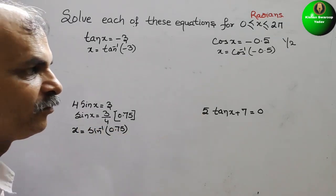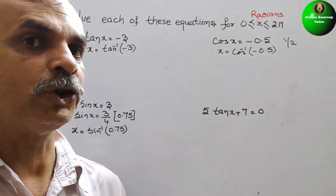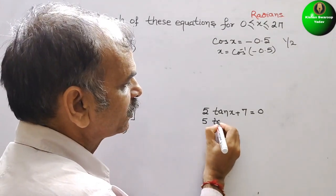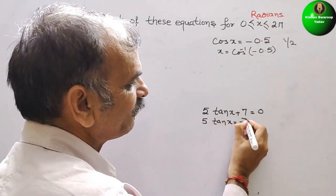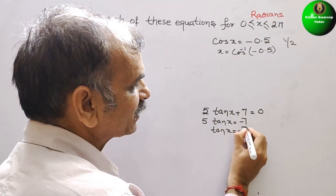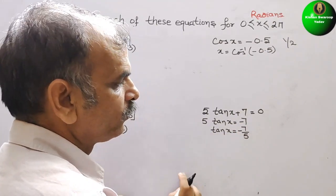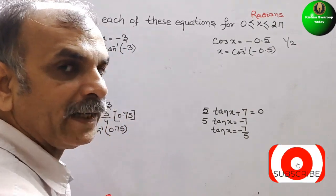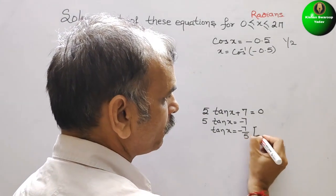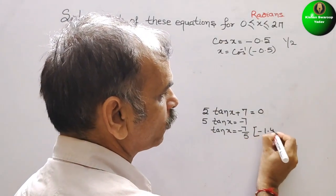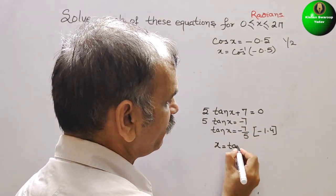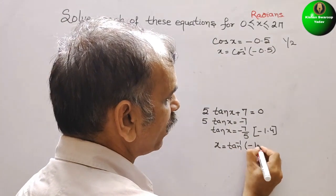Next, 5 tan x plus 7 equals 0, so 5 tan x equals minus 7, making tan x equal to minus 7/5, which is minus 1.4. So x is equal to tan inverse of minus 1.4.